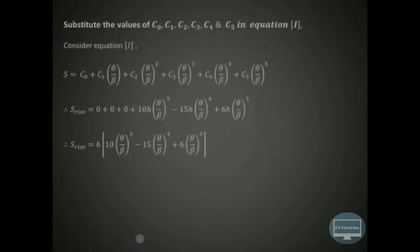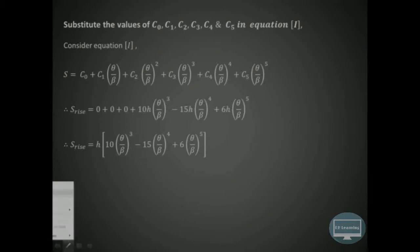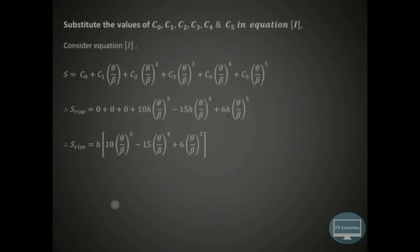Substituting all constants — C0=0, C1=0, C2=0, C3=10H, C4=−15H, C5=6H — into the displacement equation and taking H as common, we get the final rise equation: S_rise = H·[10·(θ/β)³ − 15·(θ/β)⁴ + 6·(θ/β)⁵]. That is our first answer.